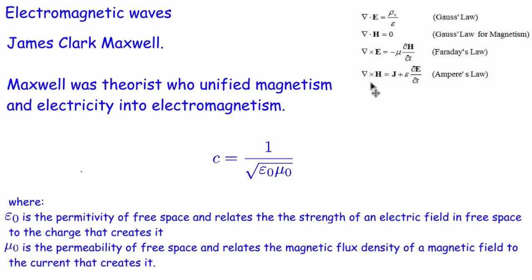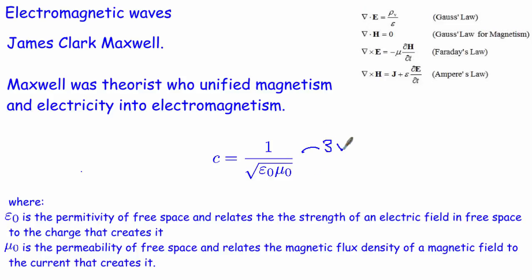When he did some work on these equations he found that some of the solutions were waves, and that they all travelled at a characteristic speed. The speed of these waves is given by one over the square root of epsilon-zero times mu-zero. Epsilon-zero is the permittivity of free space and mu-zero is the permeability of free space, and when you calculate this you get a value of 3 times 10 to the 8 metres per second — so he theoretically predicted the speed of light.